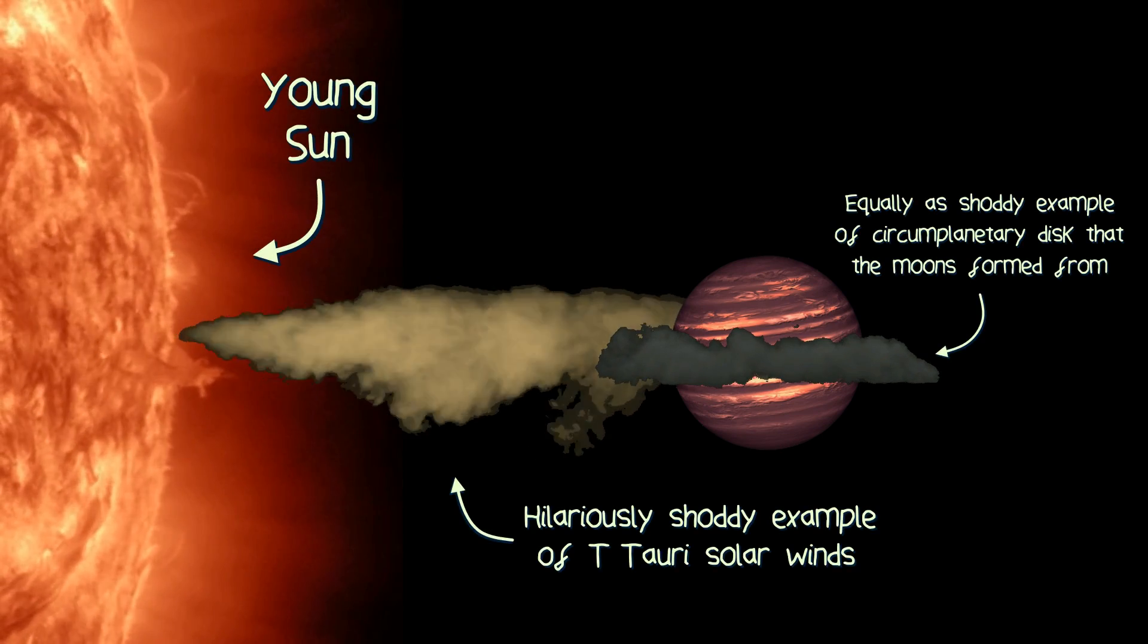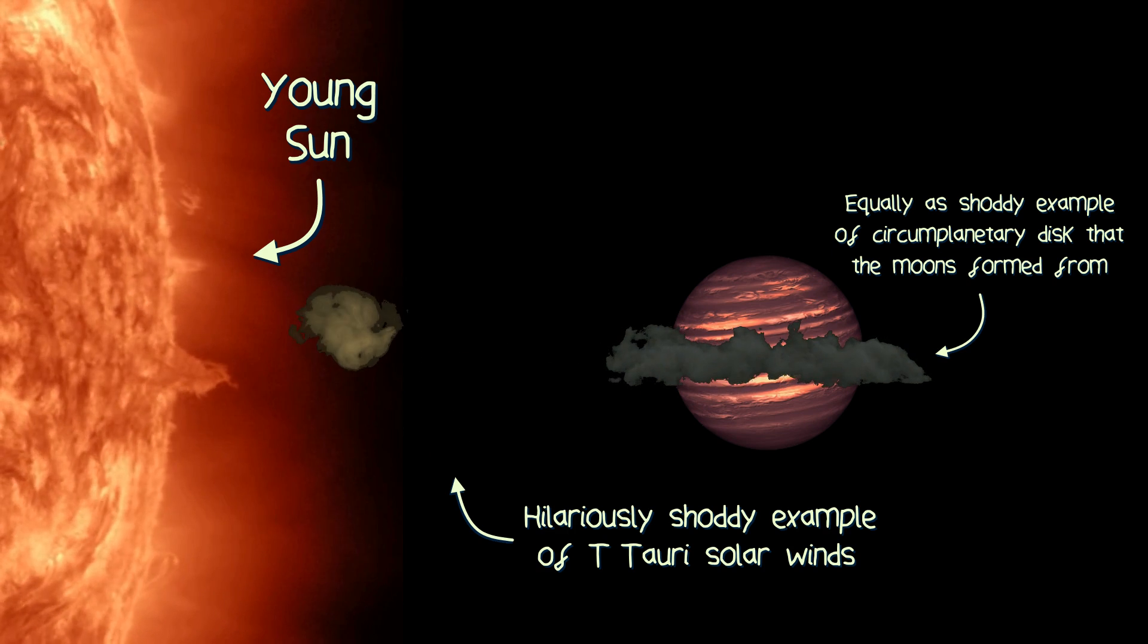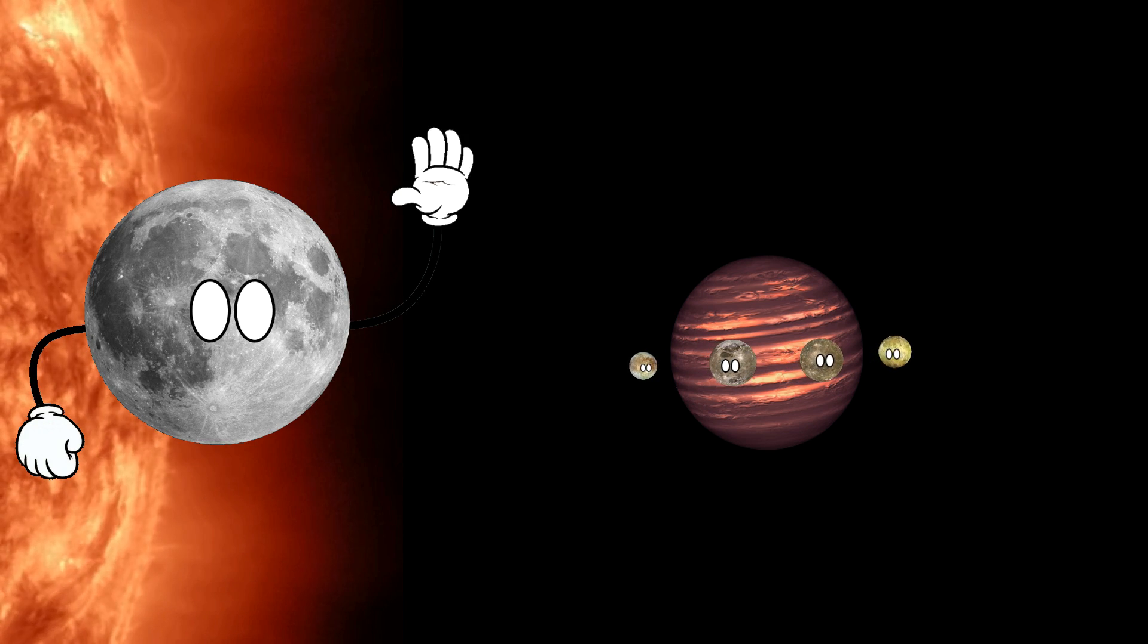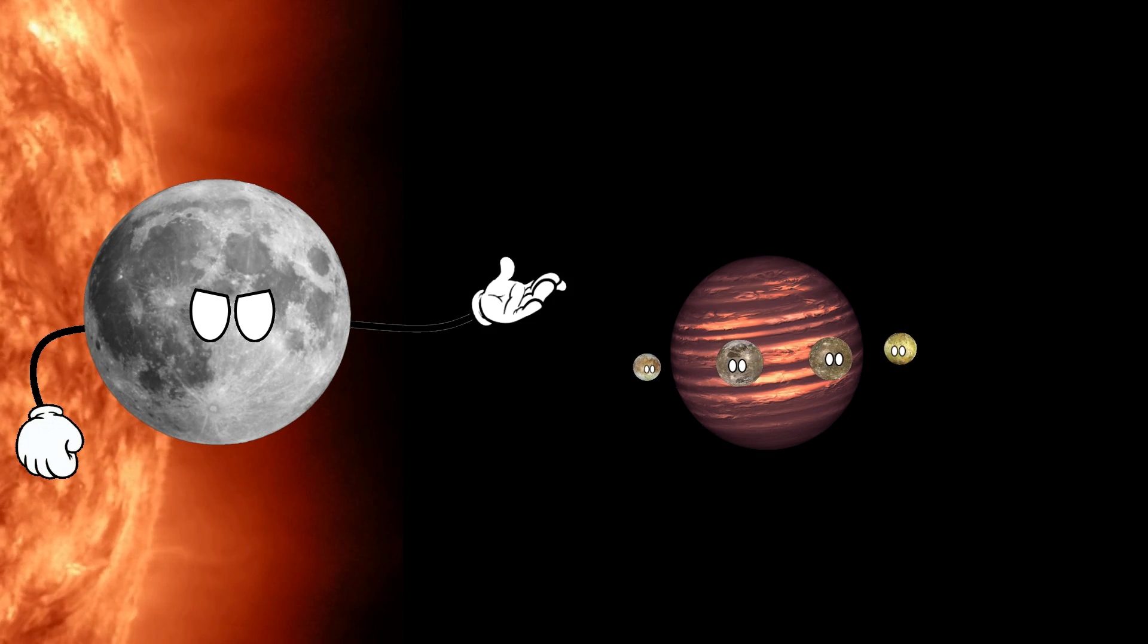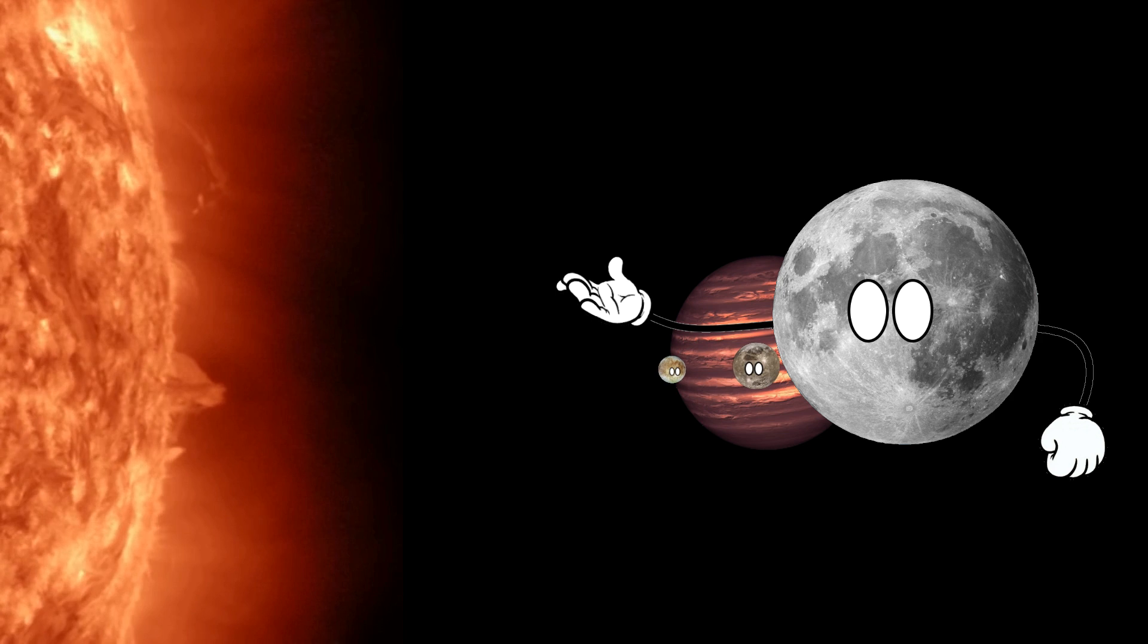Since they were far enough away from the sun to not get bombarded with the supersonic gale force solar winds, some moons actually got the chance to form around the gas giants. But why isn't there a Mercurian moon made of the heavy elements that were not blown away? Well, simply put, Mercury used them all up.